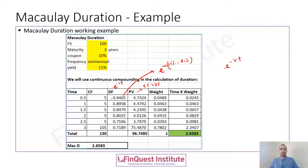We then calculate individual weights — the contribution of each cash flow's present value relative to the total bond price. These are simple ratios. For example, the weight of cash flow one is 4.732 divided by 96.74, and for the second cash flow 4.47 divided by 96.74. Naturally, all weights sum to one, since these ratios are with respect to the bond price.